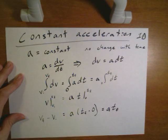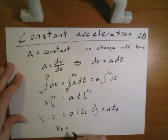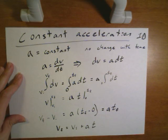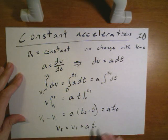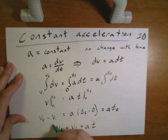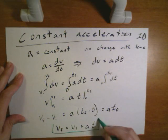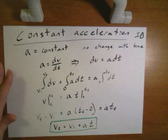So if I rearrange this equation this says that v final is equal to v initial plus a t. And here I go back to my t in these equations is the final time associated with my final velocity. So this gives us one of our equations that's commonly used for situations where the acceleration is constant.